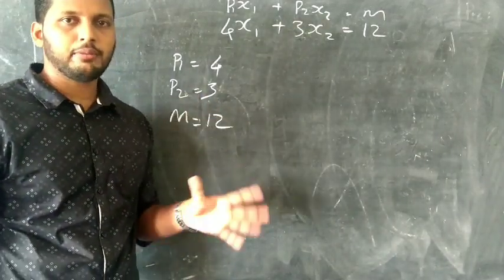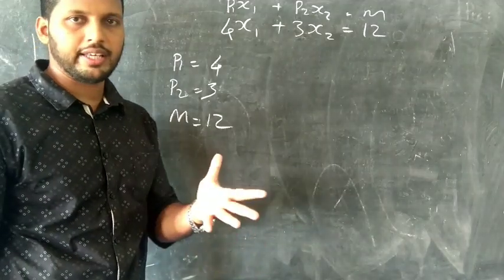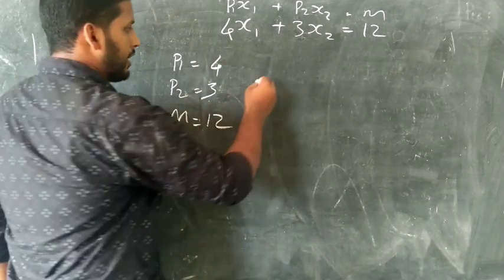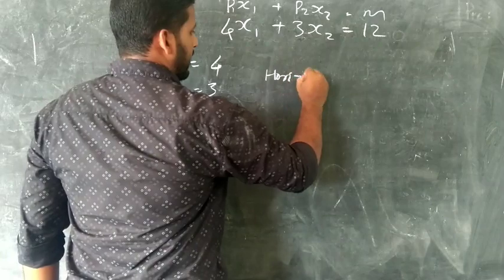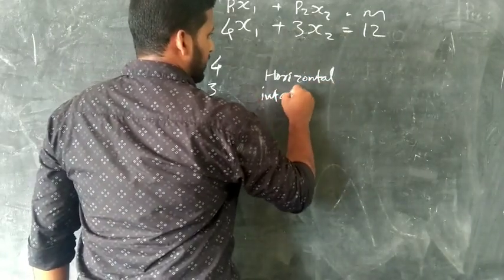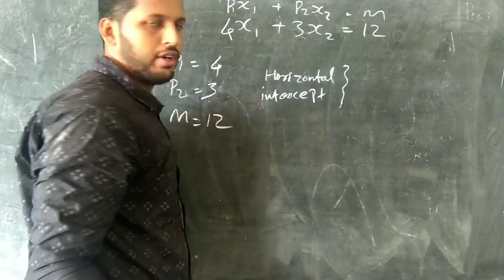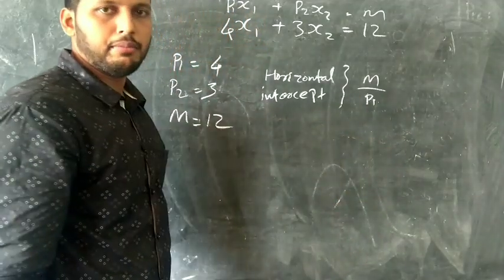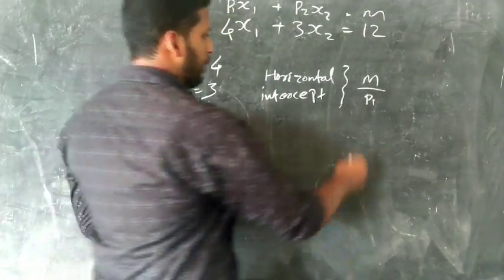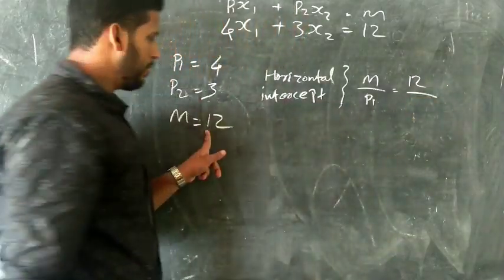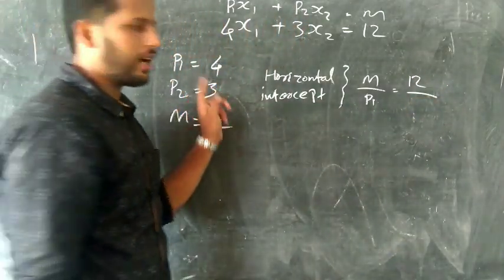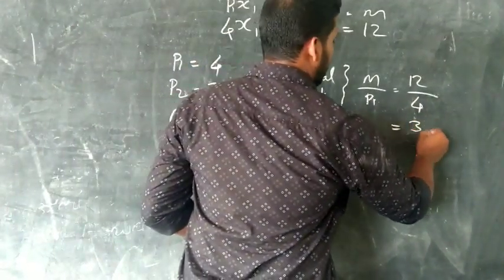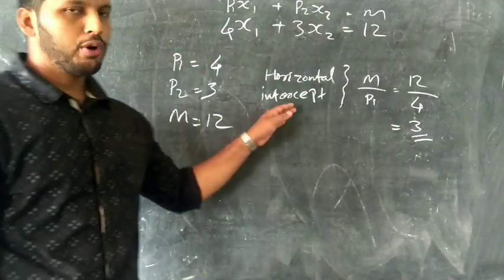We take three things to get started. It's very easy. The horizontal intercept is M by P1. M is 15, P1 is 4, so 15 by 4. The answer is the horizontal intercept.